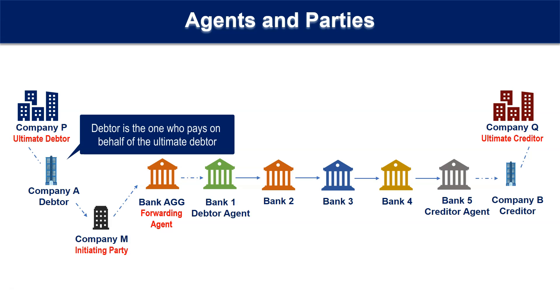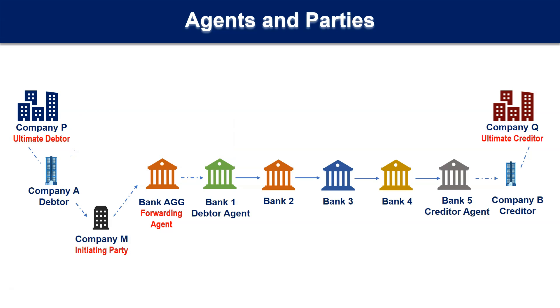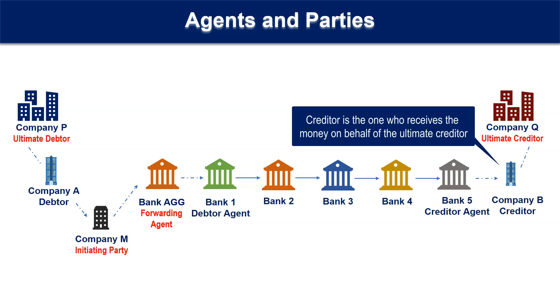The debtor is the one who pays on behalf of the ultimate debtor. The creditor is the one who receives the money on behalf of the ultimate creditor.